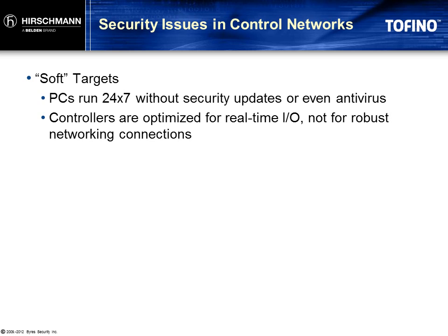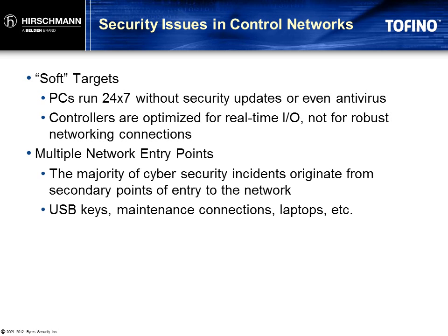Second, many control networks have multiple pathways through which cybersecurity threats can enter the plant. These pathways often bypass existing security measures and some of them don't even appear on a network diagram. For example, laptop computers that are carried in and out of plants, or USB keys that can move from one PC to another, can easily bring malware into the plant and rapidly spread it from one system to another.